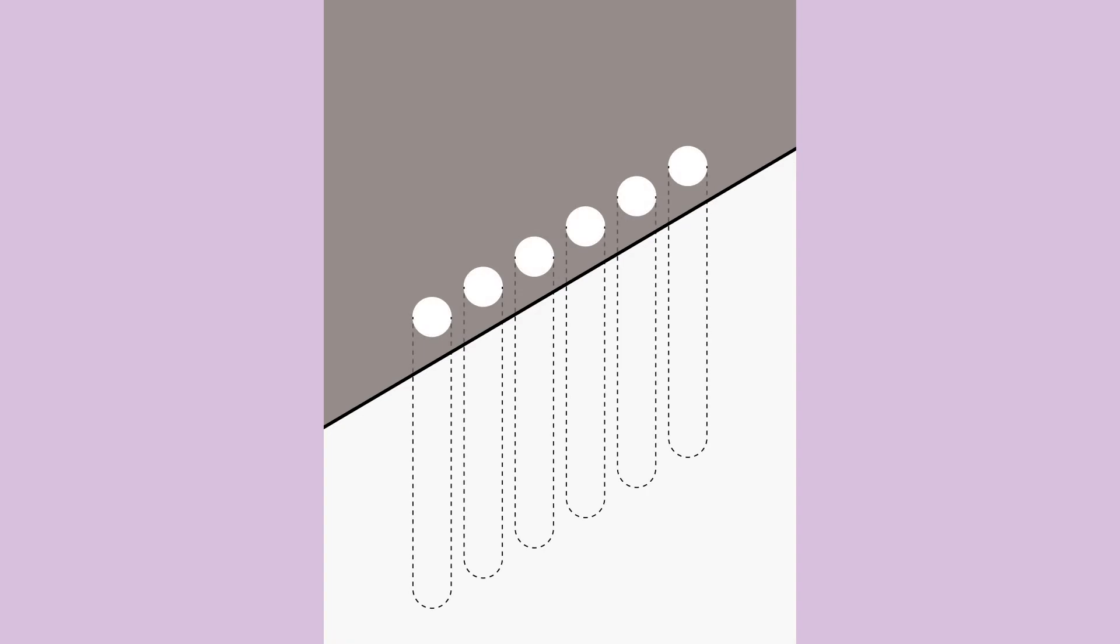Secant pile walls are created by first drilling a series of piles along the future wall alignment, spaced out with a little less than the diameter of each pile between them.